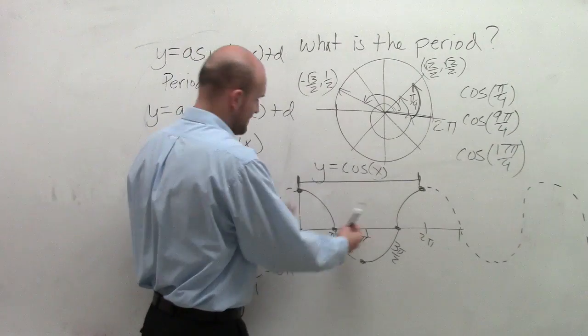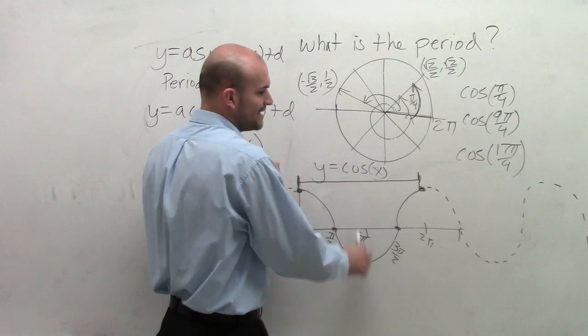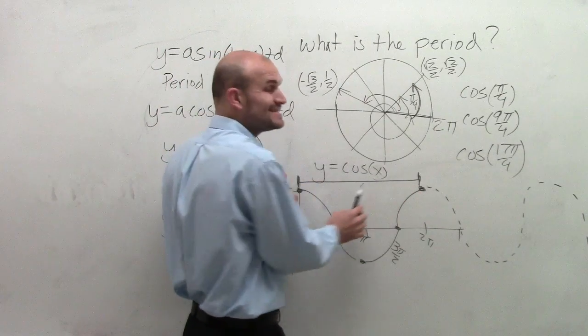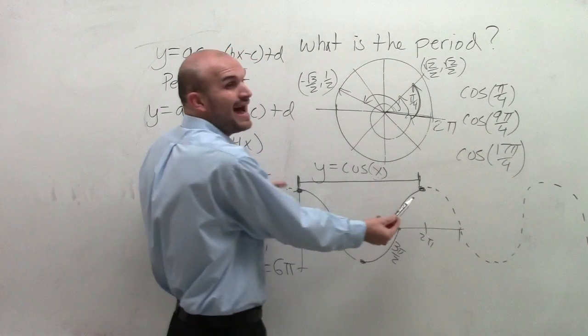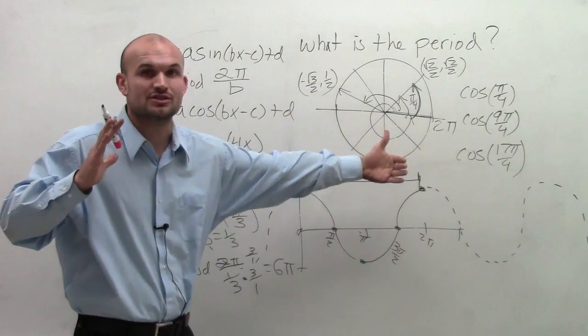So therefore, if I was going to graph this function with a period of 6 pi, rather than it having taken a distance of 2 pi for the graph to repeat itself, it's now going to take a distance of 3 times what I'm showing you for the graph to complete itself. So it's being stretched horizontally.